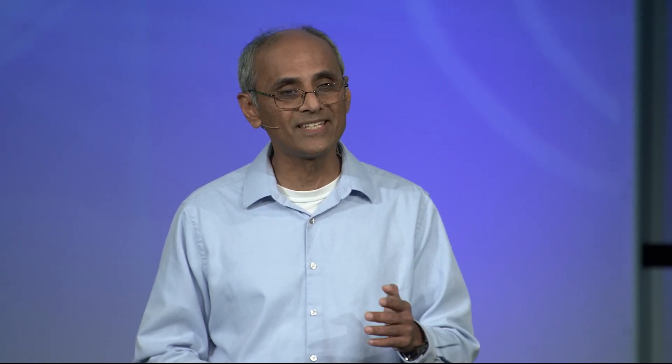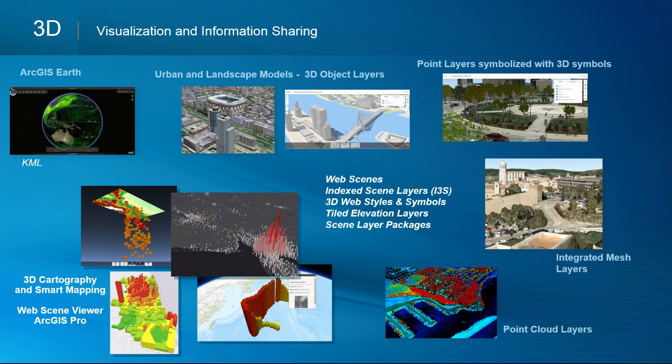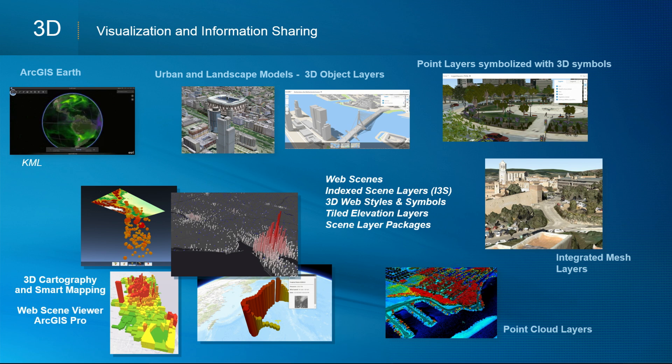3D is a very important area. We've been looking at all of the different information types, including point clouds, integrated meshes, and 3D objects. For each of these, we're building layers that make it easy to work with them in applications. We're also sharing the core specifications so you can access them through our APIs or directly — including the packaged versions, scene layer packages.